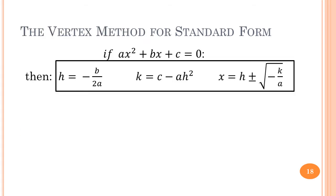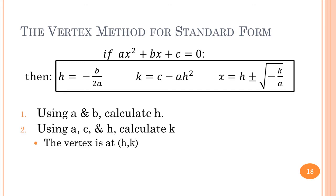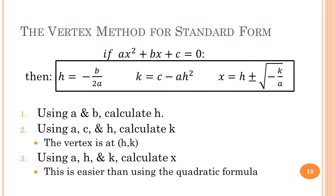Here is the vertex method for the standard form. The formulas are: h equals negative b over 2a; k equals c minus ah squared; and the vertex root equation x equals h plus or minus the square root of negative k over a. All you do is take a and b to calculate h, then use a, c, and h to calculate k — and the vertex is at (h, k), which is useful information. Then with a, h, and k, you can find x. I believe this is much easier than using the full quadratic formula.